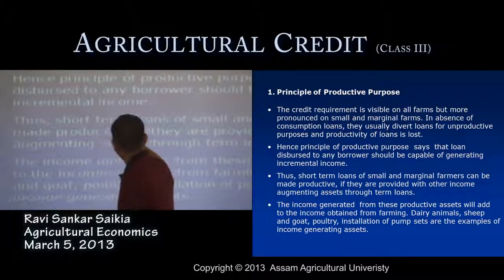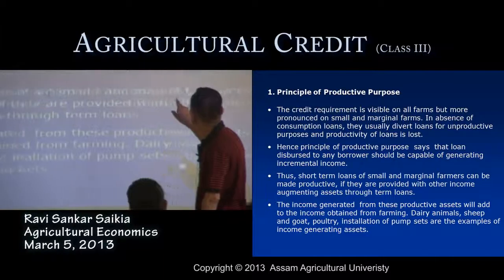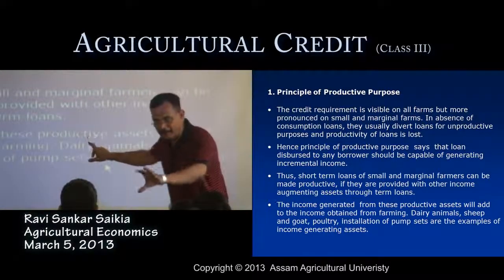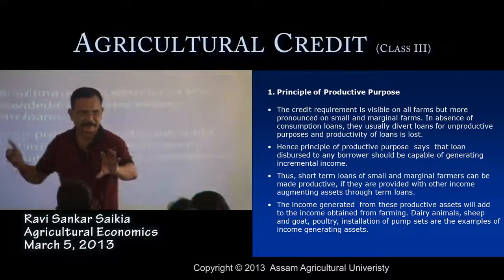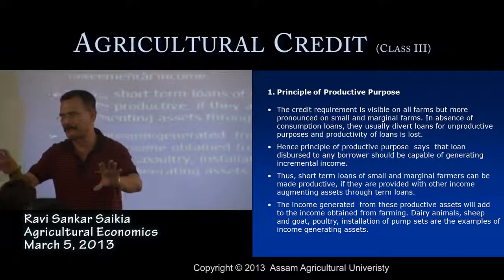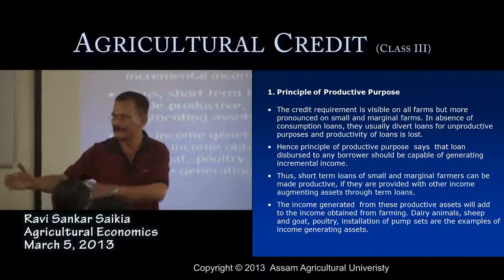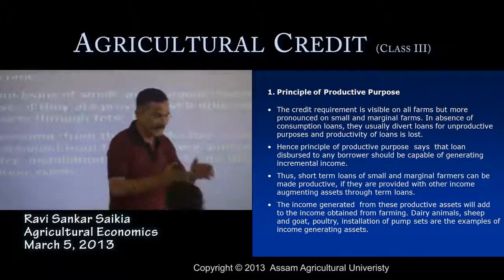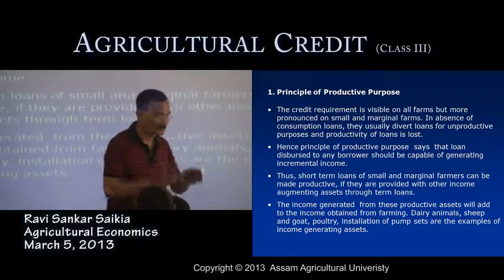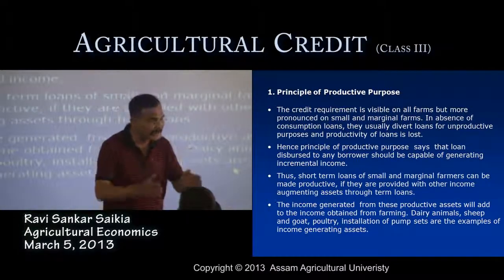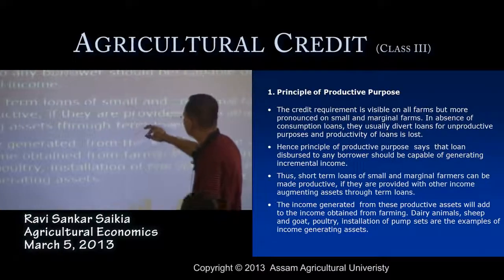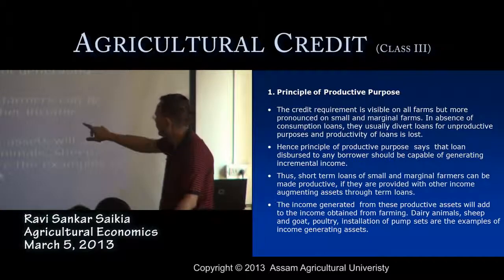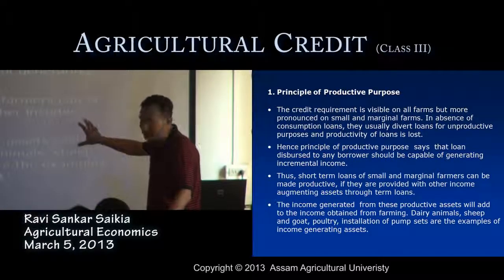The principle of productive purposes states that any loan disbursed to a borrower should be capable of generating incremental income, supplementing the income from the farmer's main occupation. If farmers are engaged by the banking organization in allied activities, it will generate additional income supplementing their major income. Short-term loans of small and marginal farmers can be made productive if they are provided with other income-augmenting assets.